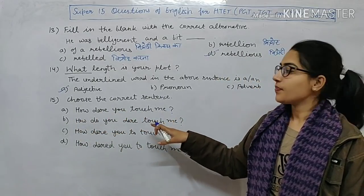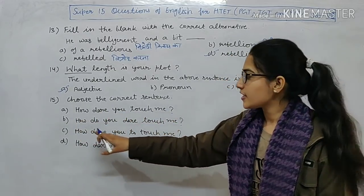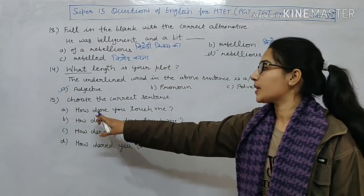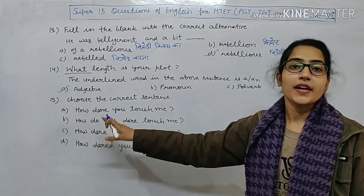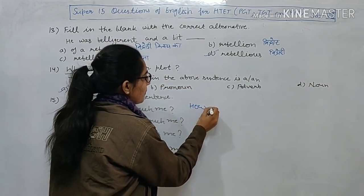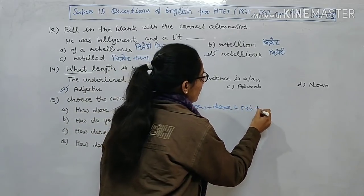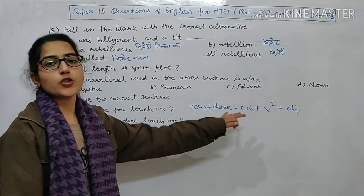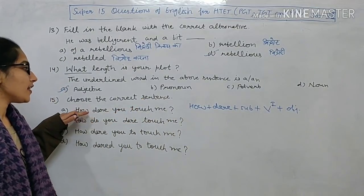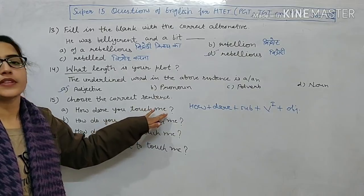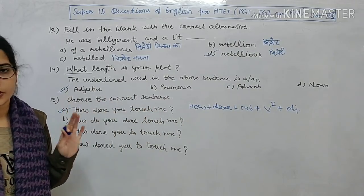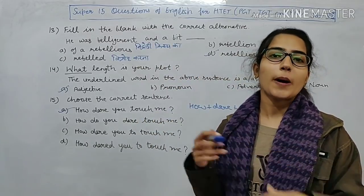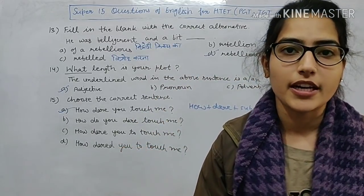Next: choose the correct sentence formation. Options: A — How dare you touch me, B — How do you dare touch me, C — How dare you to touch me, D — How dared you to touch me. The structure is: how + dare + subject + verb first form + object. Option A fulfills this structure correctly — How dare you touch me. Option A is the right answer. I hope you liked this video; subscribe for more updates.